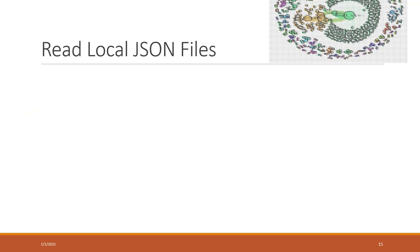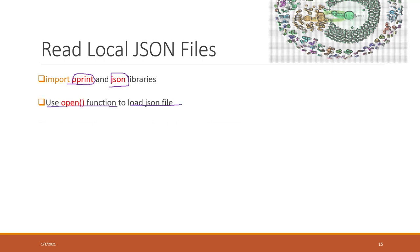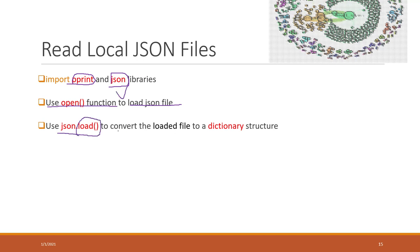So how can we load data in JSON format? You can load data directly from the internet, or you can use the open function to open data from your local computer. There are several Python libraries that can help us work with JSON. The first is pprint, which prints JSON or dictionaries with indentations so we can see the structure more easily. The second is the JSON library, which can load data into a format Python can analyze. We use the open function to load the JSON file and json.load to convert it into a dictionary structure. After that, you can treat all the JSON data as a dictionary.